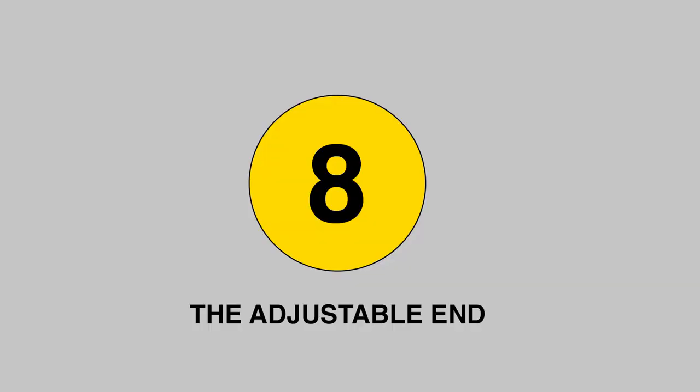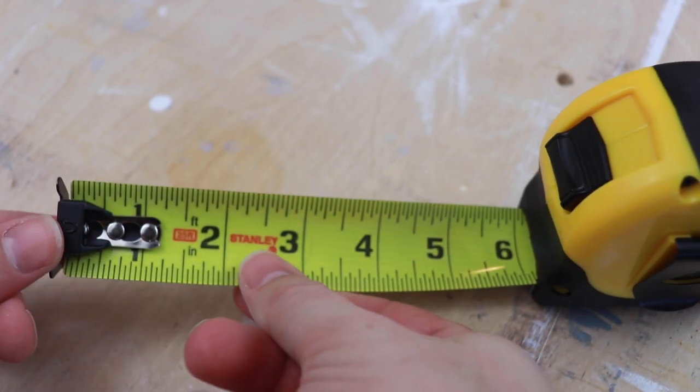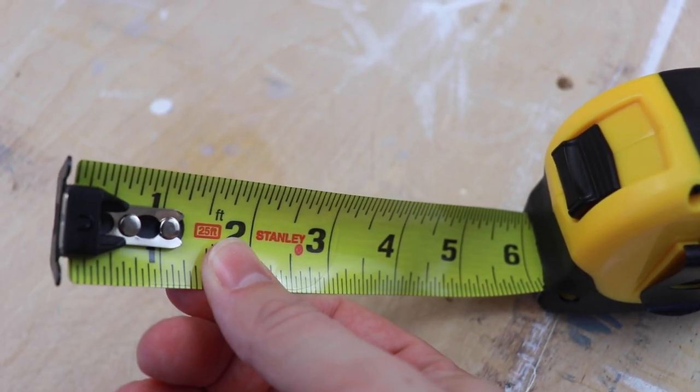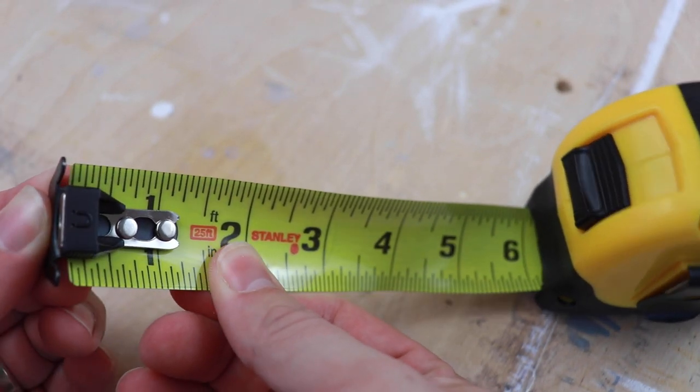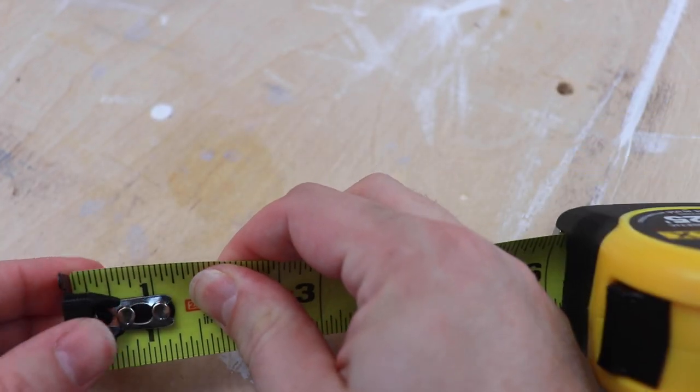Number 8: The adjustable end. The adjustable end is there for a reason. It's often called true zero. See, the metal tip at the end of your measuring tape is a little bit loose for a reason.